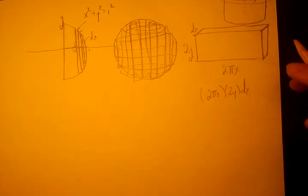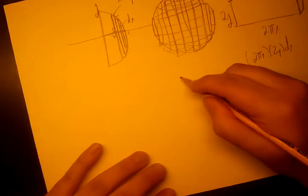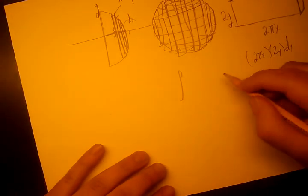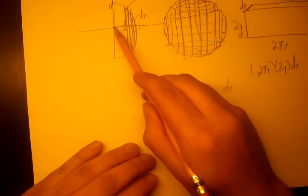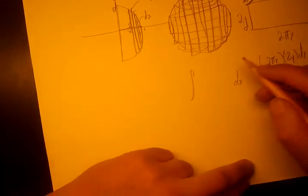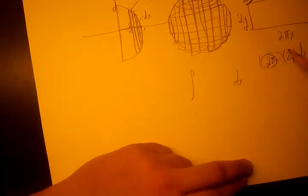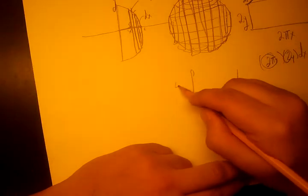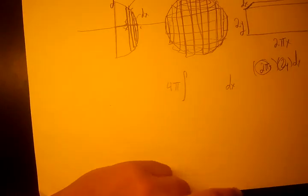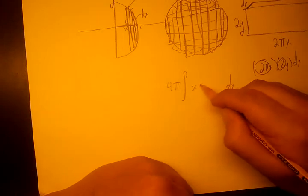And now we don't just want one of those. We want to sum them up. We want to sum all of those up. We want to use dx because we're integrating with respect to x here. I'm going to take this 2π and this 2 and combine them to 4π and move them outside the integral so we can clean this up a little bit.